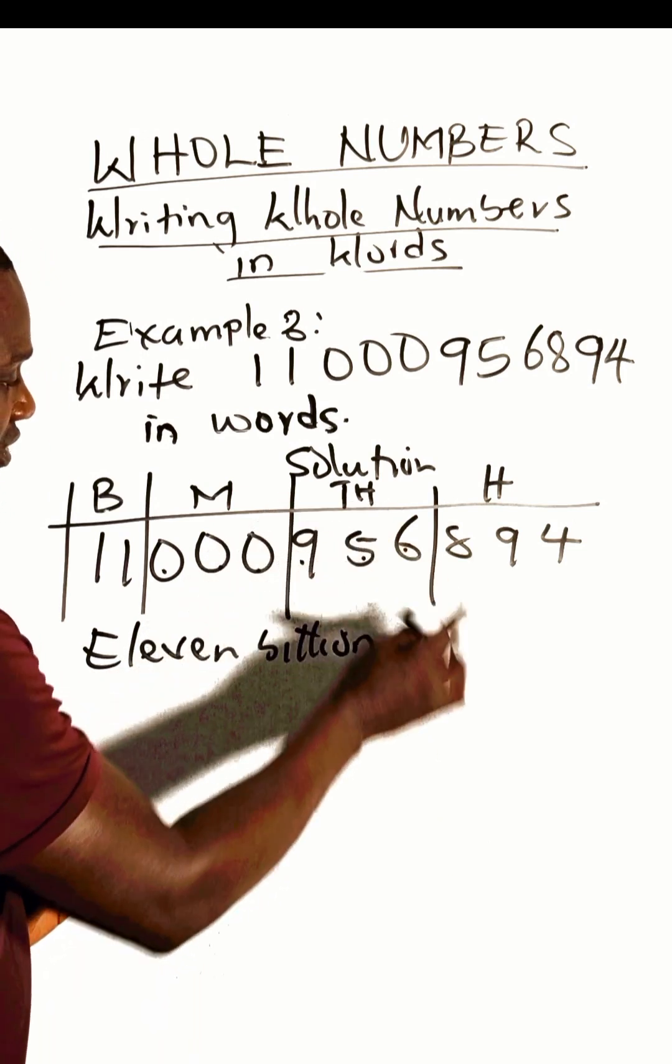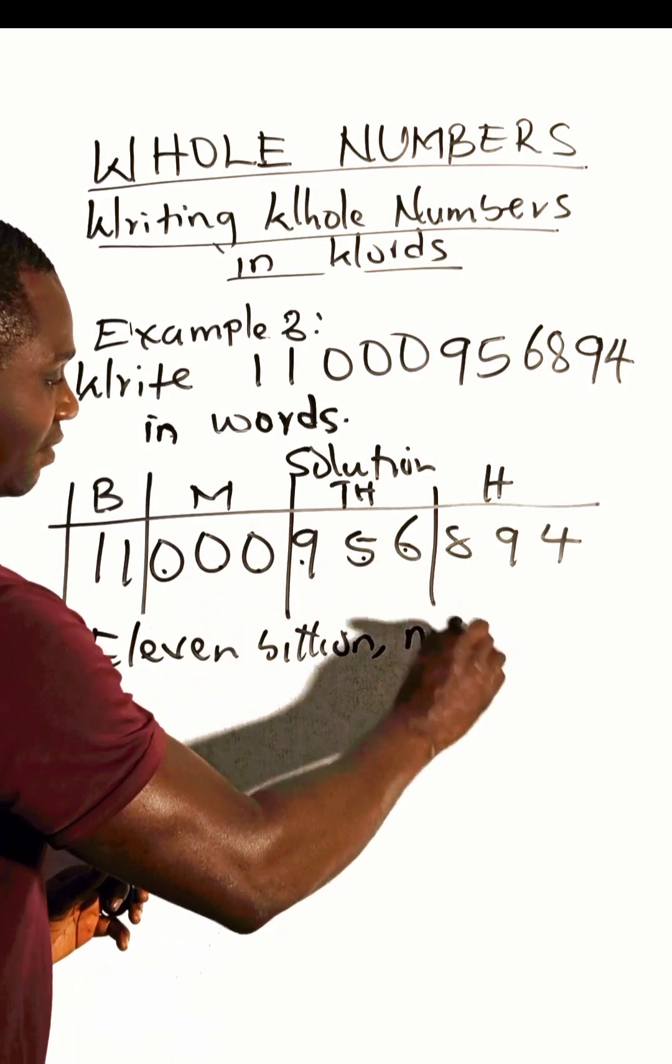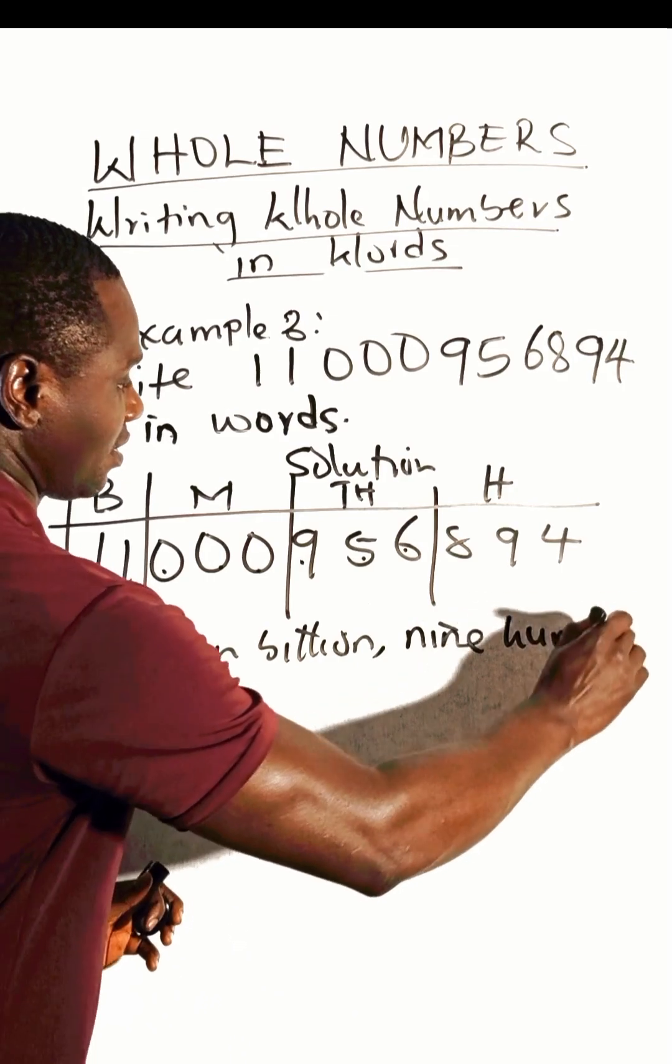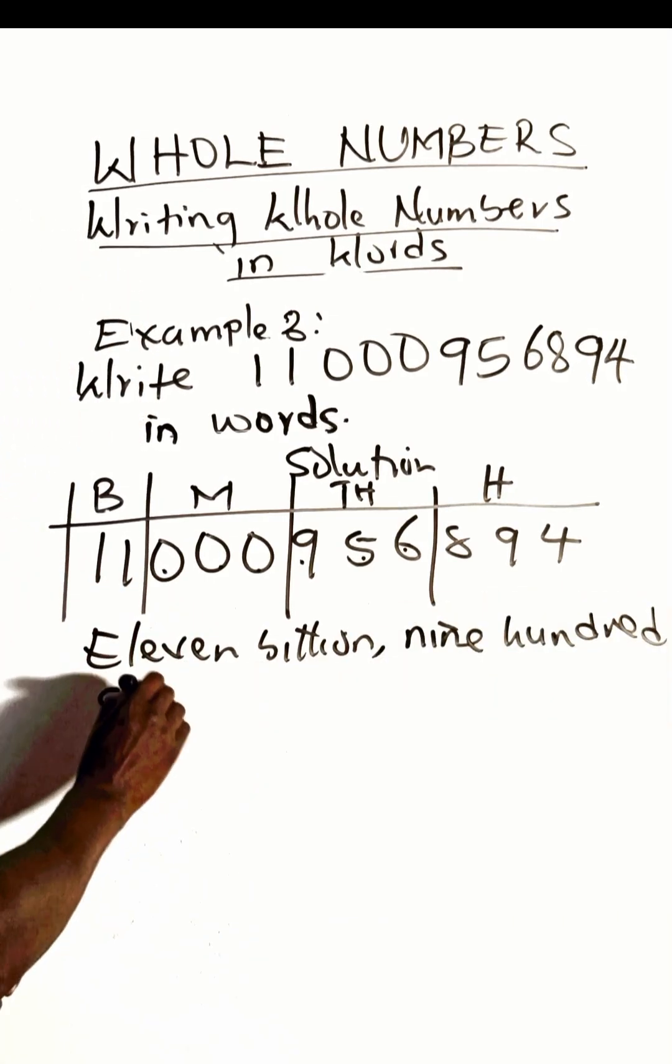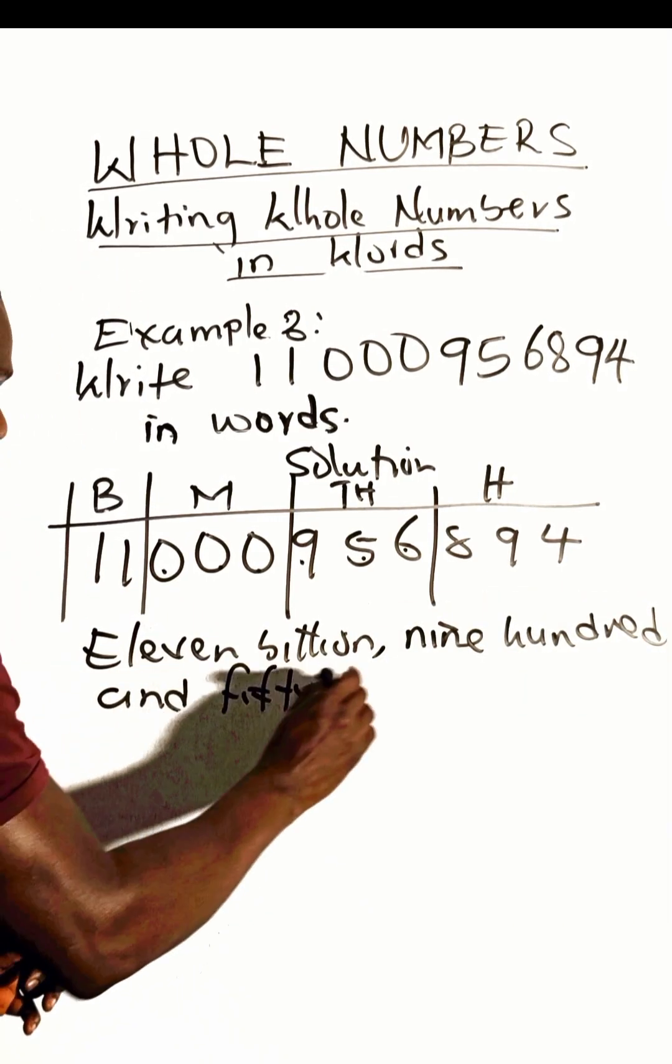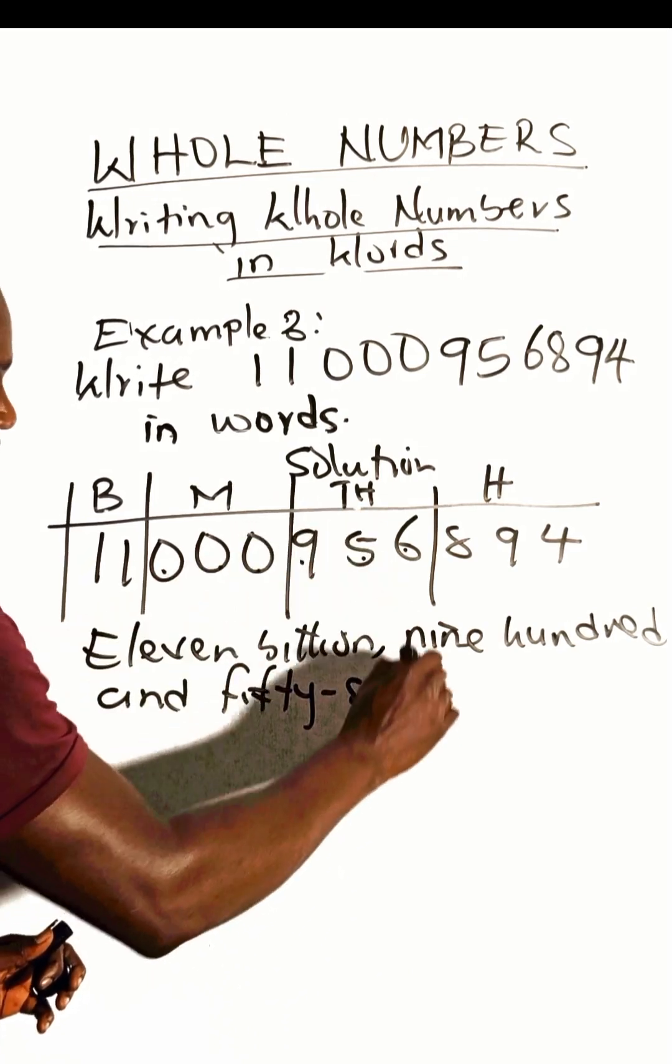Put your thousands: nine hundred and fifty-six. So write nine hundred and fifty-six thousand.